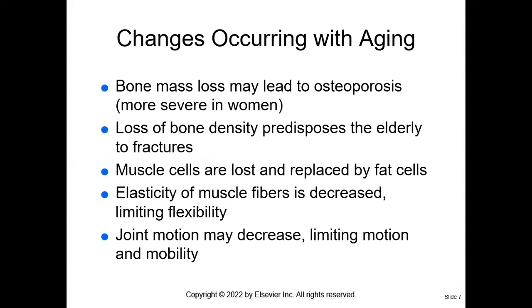In your textbook on page 273, you'll see that bone mass changes can lead to osteoporosis, usually found in postmenopausal women. As the patient ages, there is a loss of bone density that predisposes the geriatric patient to fractures. Muscle cells are also lost and replaced by fat cells, and elasticity of muscle fiber decreases. Joint motion may decrease limiting mobility.